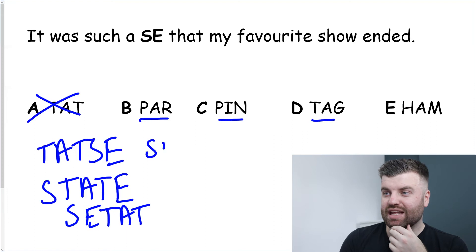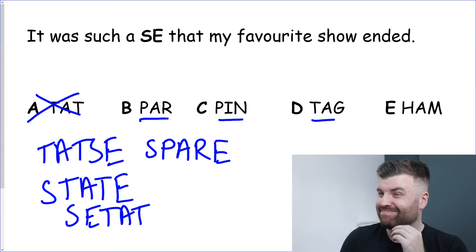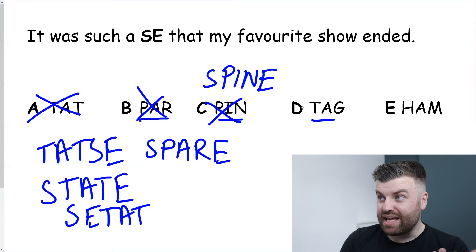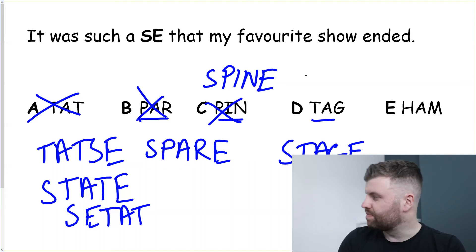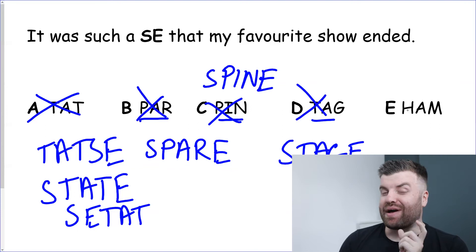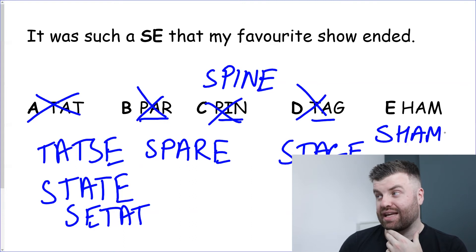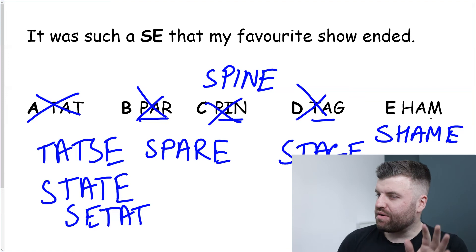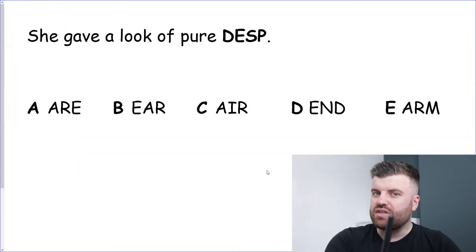Options B (PAR → SPARE), C (PIN → SPINE), and D (TAG → STAGE) all make words, but none make sense in the sentence. Getting to option E — HAM — put it in the middle and notice something important: the sounds the letters make can change when you insert the answer. In HAM the 'a' sound changes when we add the E at the end. So HAM in the middle of SE gives us SHAME. 'It was such a shame that my favourite show ended' — that makes perfect sense. The answer is E — HAM.